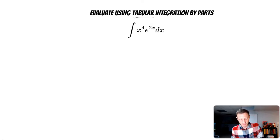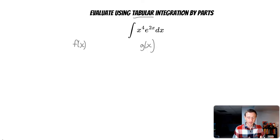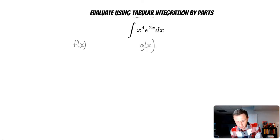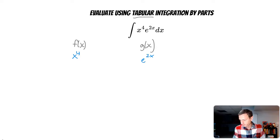The way you want to do tabular is you want to designate a term f(x) and another term g(x). Your f(x) should be easily differentiated — meaning you can take the derivative multiple times very easily. Your g(x) should be a term you can take the integral of very easily. So I'm going to set f(x) equal to x to the 4th and g(x) equal to e to the 2x.